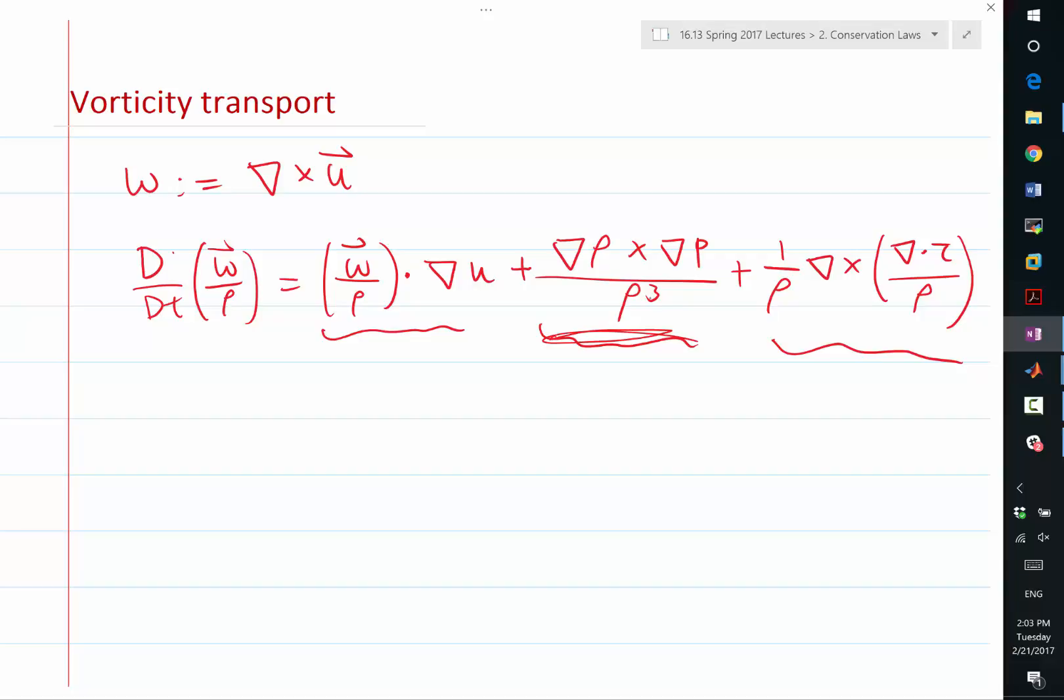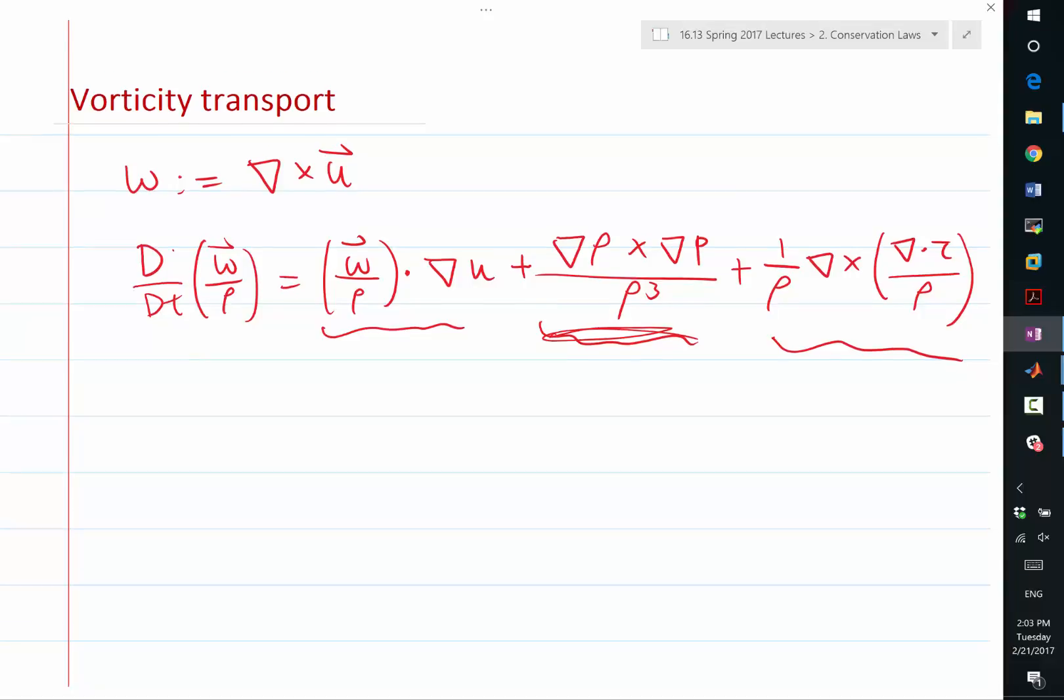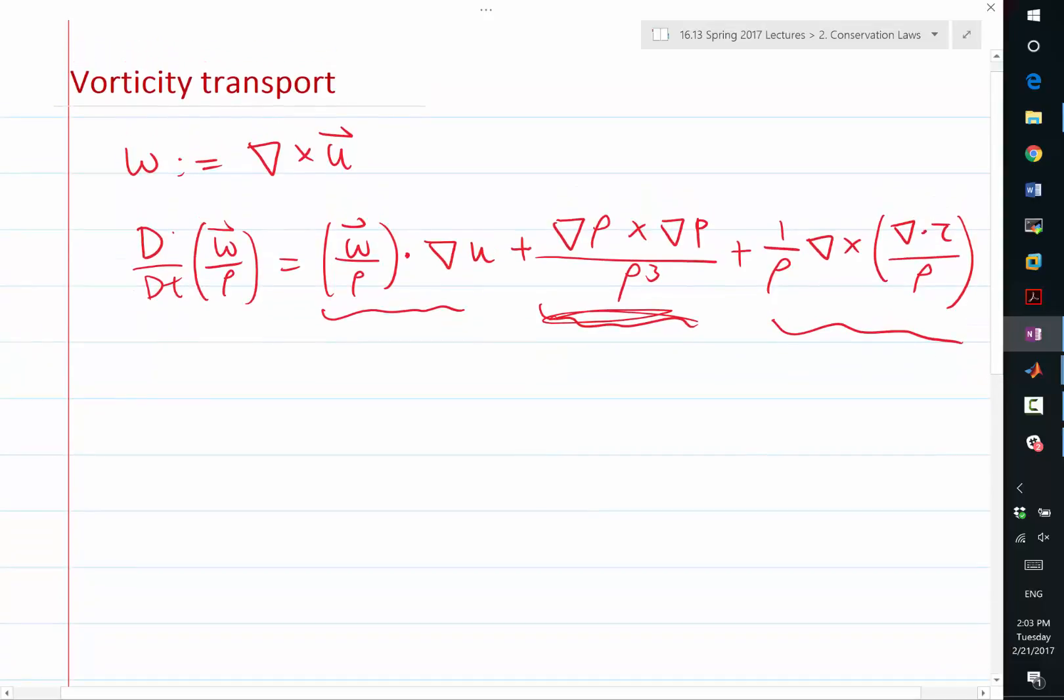And if you ever struggle to remember the sign of the baroclinic torque, is grad P in front or grad rho in front? That's how I usually figure that out. Open your door to the cold outside. I think living in Boston helps you do that.